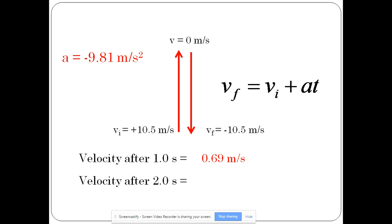Do the same equation. We've got our VI. We know A. The time we're going to use here is two seconds. It ends up being negative 9.12 meters per second. So we can tell it's on its way down and it's probably right around here.